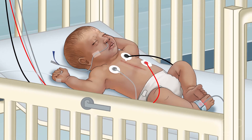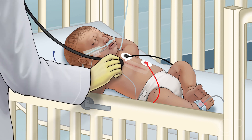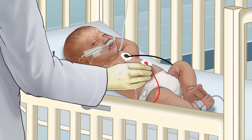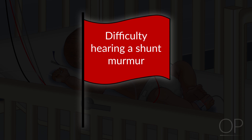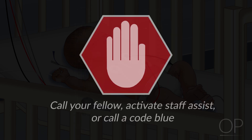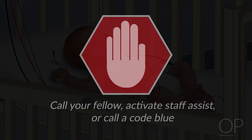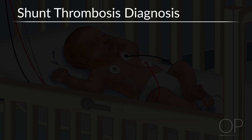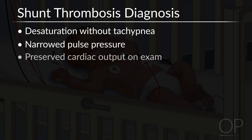With these vital signs, you will want to apply oxygen immediately and quickly perform a targeted physical exam. Upon examination, you find the patient to be irritable and slightly blue. She has clear lungs, no clear shunt murmur, a soft abdomen, normal capillary refill, and normal pulses. Difficulty hearing a shunt murmur should be a red flag, and you should call your fellow and activate a staff assist or a code blue immediately to get additional nursing and physician resources into the room. Make sure your patient has IV access. This presentation is concerning for shunt thrombosis, which is an emergency. Evidence that supports this diagnosis includes desaturation without tachypnea, narrowed pulse pressure, and preserved cardiac output on exam.